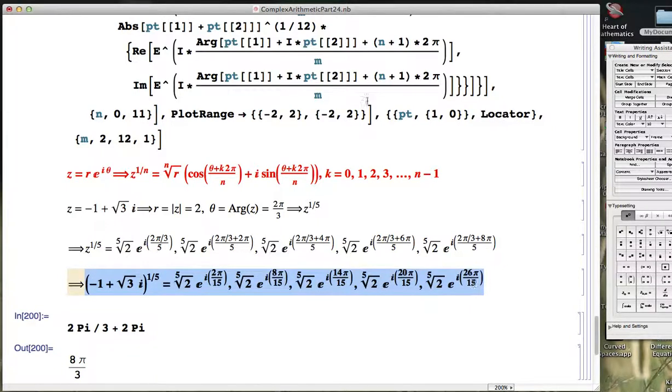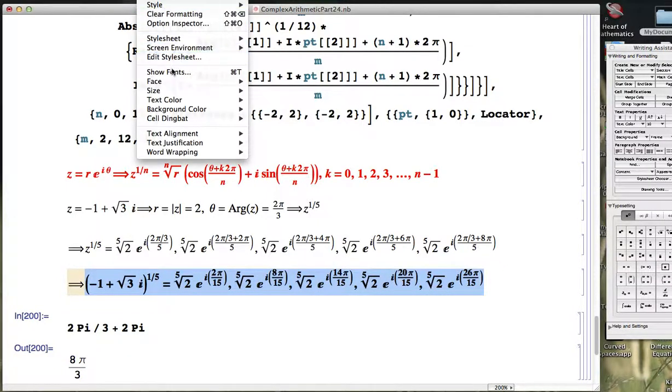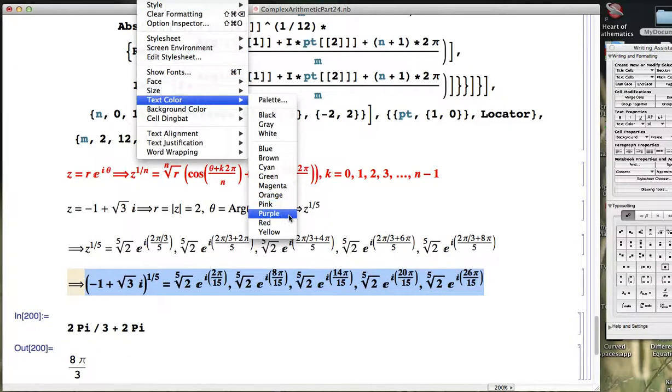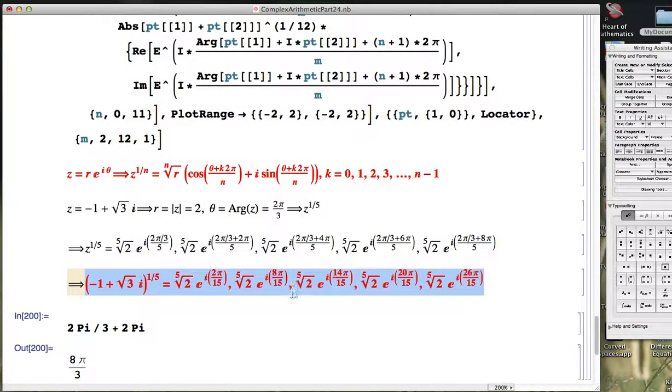Again, you could convert this into rectangular form if you so desired, though you would probably have to approximate these cosine and sine values if we're going to get a good idea about where these numbers are. Now that's the end of this video.